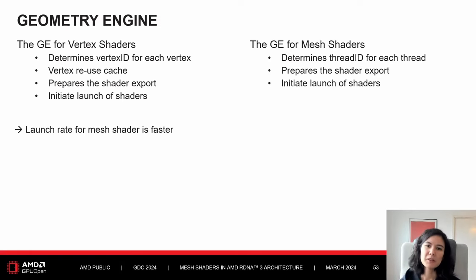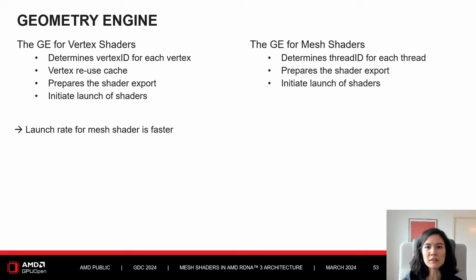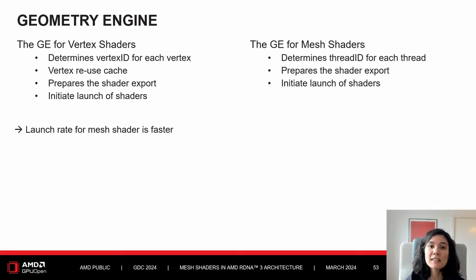Now let's talk about what the Chomty engine actually does for mesh shaders. It determines the thread ID for each thread — equivalent to determining the vertex ID for each vertex — it prepares the shader export, and it initiates the launch of the shaders. Since it doesn't do any vertex reuse cache optimization, it has less work to do for mesh shaders, resulting in a faster launch rate. So here you have another potential performance advantage when using mesh shaders.